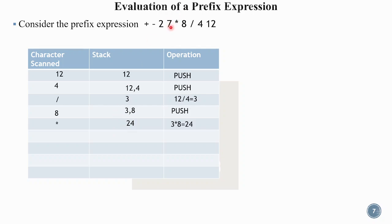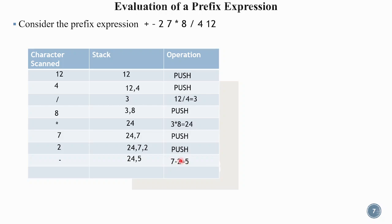Next, we scan 8 — operand, so push 8; stack now has 3 and 8. Then star operator: pop 8 and 3, perform multiplication: 3 into 8 equals 24, push 24 onto the stack. Scan 7 — push 7. Scan 2 — push 2. Then minus operator: pop 7 and 2, perform 7 minus 2 equals 5, push 5. Then plus operator: pop 24 and 5, perform 24 plus 5 equals 29, push result.